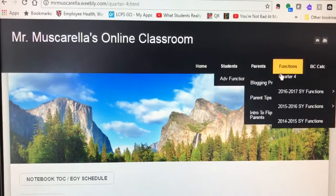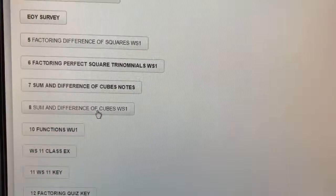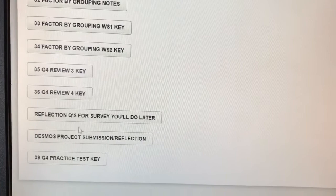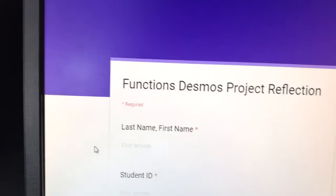Then, over on my webpage, you're gonna go to functions, over here to quarter four. Click on that, and then all the way down towards the bottom—I think I might move it up towards the top for you just to make it a little bit easier so I don't have to scroll so much—but right here, Desmos project submission reflection, you're gonna click on that.